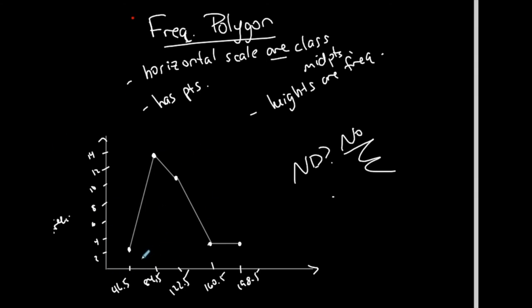So again, what's the difference? Dots instead of bars. I have to use class midpoints on the horizontal scale instead of the option of class midpoints or class boundaries. And then I connect the dots and there's my frequency polygon. Not hard, right? Very, very easy.